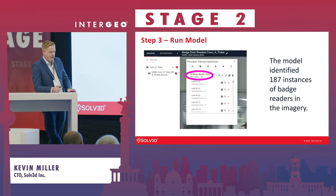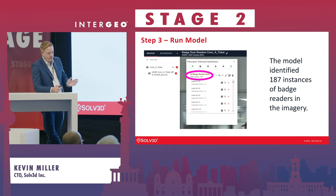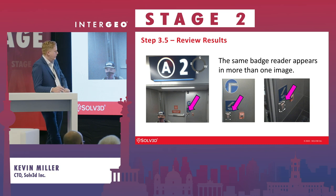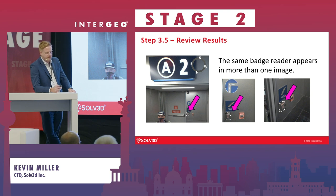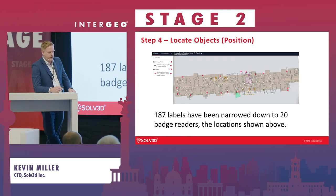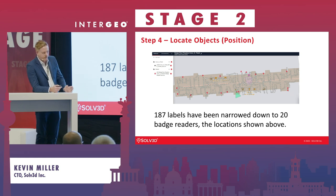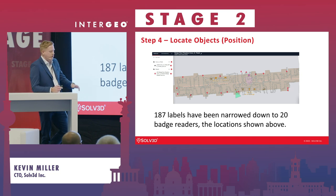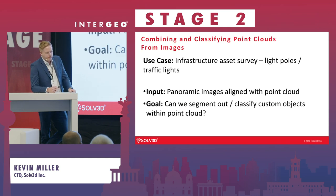They ran the model on all 2,000 images and found 187 instances of badge readers. The same badge reader appeared in multiple images from different perspectives, which is expected. Using our platform, they extracted the positions of those badge readers, narrowing 187 labels down to 20 unique badge reader locations, which were displayed on a map and could be exported as a CSV.